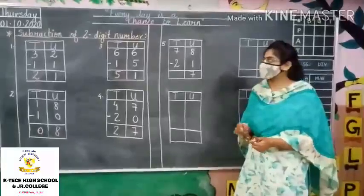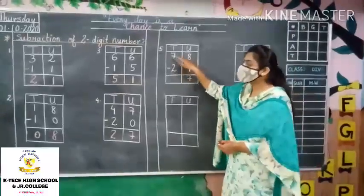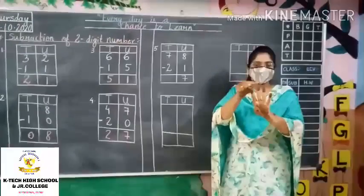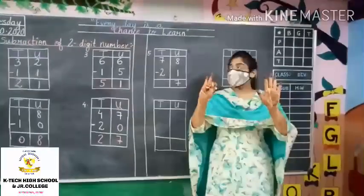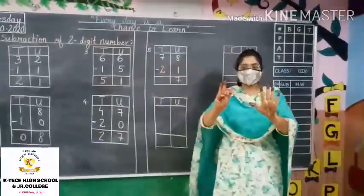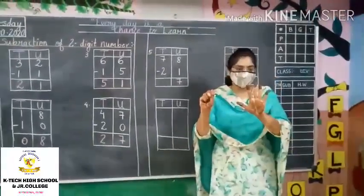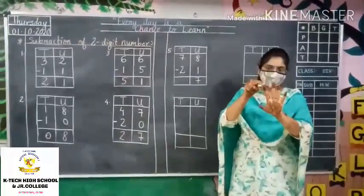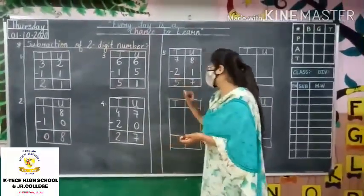Now we will go for the tens part: 7 minus 2. Put up 7 fingers — 1, 2, 3, 4, 5, 6 and 7. We have to remove 2 fingers — remove 1 and 2. How many fingers are remaining? 1, 2, 3, 4 and 5. So the answer is 5. That is 57.